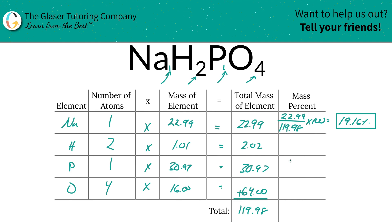We're going to do the same process now for hydrogen. So we're going to take the total mass of hydrogen, 2.02, divided by 119.98, times that by 100, and we have a mass percent here of 1.68 percent.